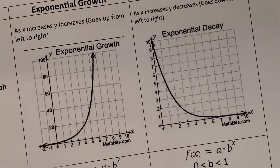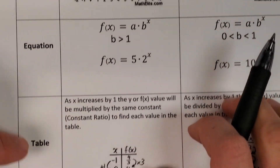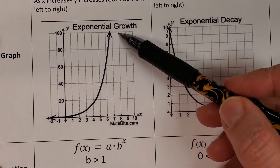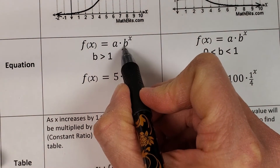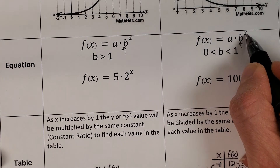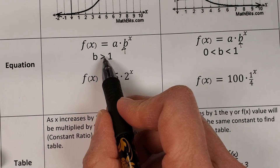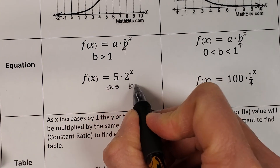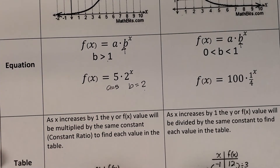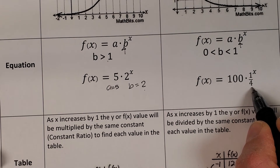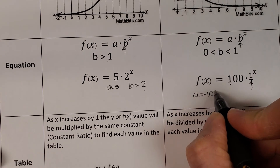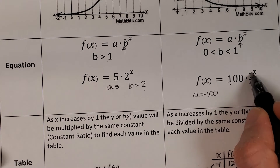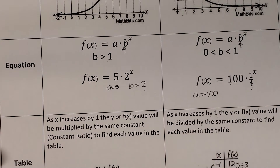Now let's look at each of the three ways to identify growth or decay. For graphs, growth goes up from left to right and decay goes down — and it's a curve, not a straight line. For equations, you look at b: if b is greater than 1 it's growth; here our a is 5 and b is 2, so it's a growth model. The next equation has b equal to one fourth — between 0 and 1 — so a is 100 and the constant ratio one fourth makes this a decay model.